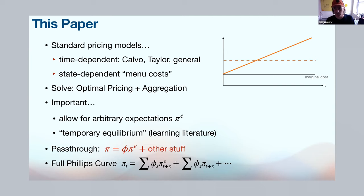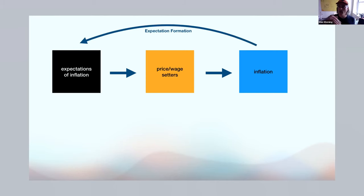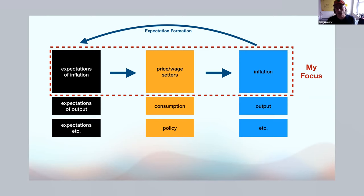To fix ideas: I have a black box for expectations and see how that affects price setters, then calculate resulting inflation. Everything is analogous for wage-setting models, but I focus on price setting. I'm not modeling expectations — there's great theory and empirical literature on that — and I'm not adding all macro model elements. The advantage is portability: my results can be applied to any setup with different expectation models or model structures.